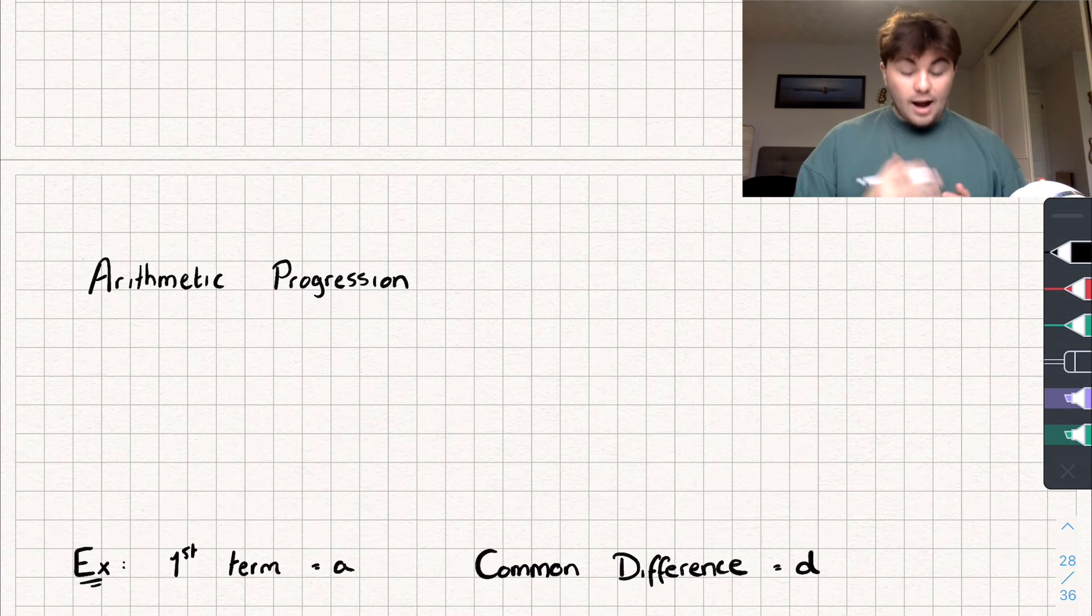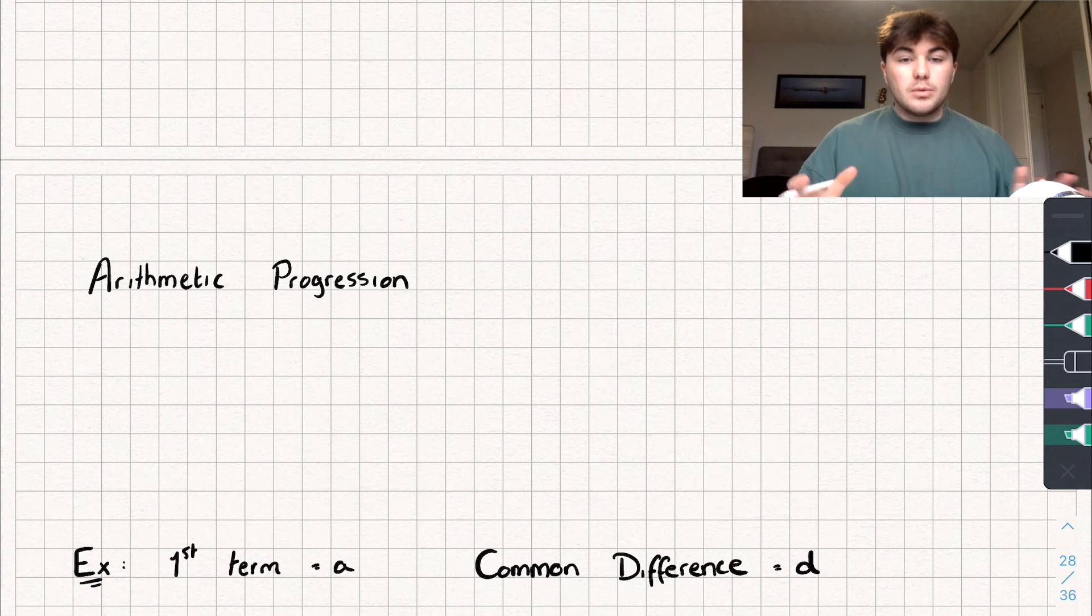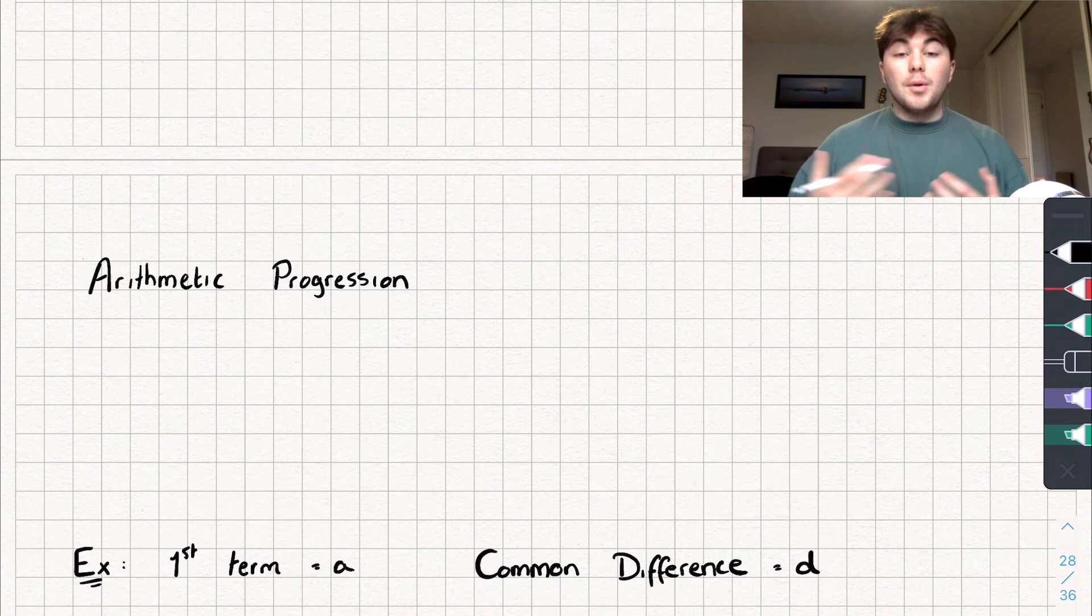Hello, in this video we're going to be taking a look at arithmetic progressions, which are really easy. All it is is just a type of linear sequence. So by linear sequence we mean a sequence that's going to increase or decrease by the same amount every time. And so we could say that it's got the same common difference.